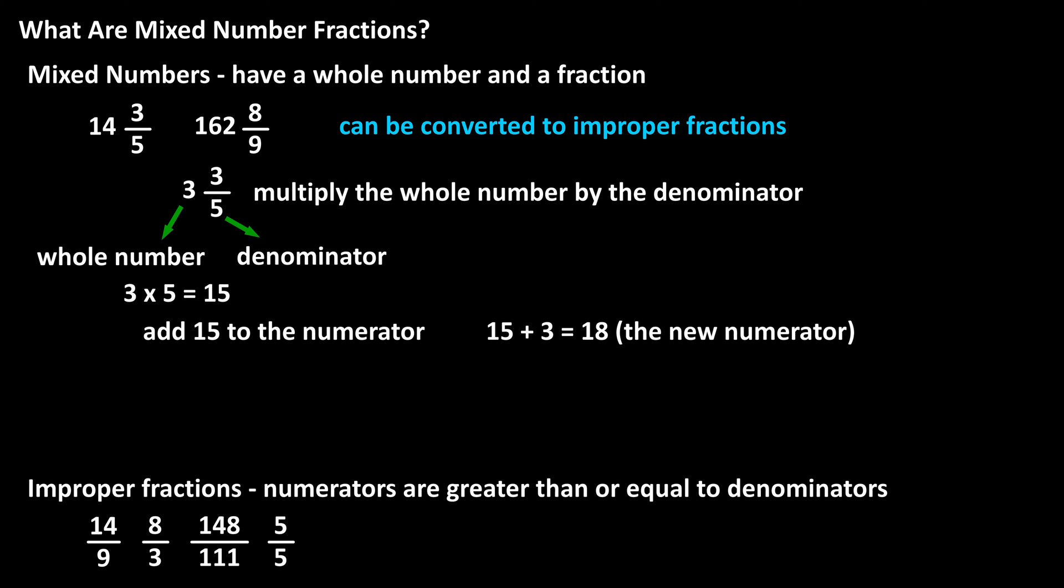Then we add that to the numerator in the mixed number, so 15 plus 3, which is 18, and we keep the same denominator of 5, so the final improper fraction is 18 over 5.